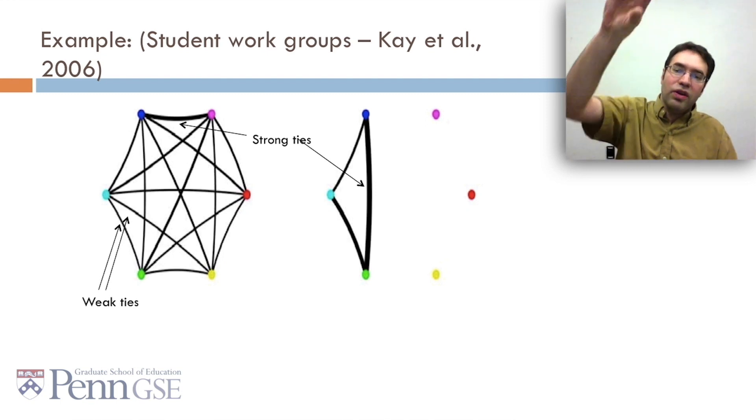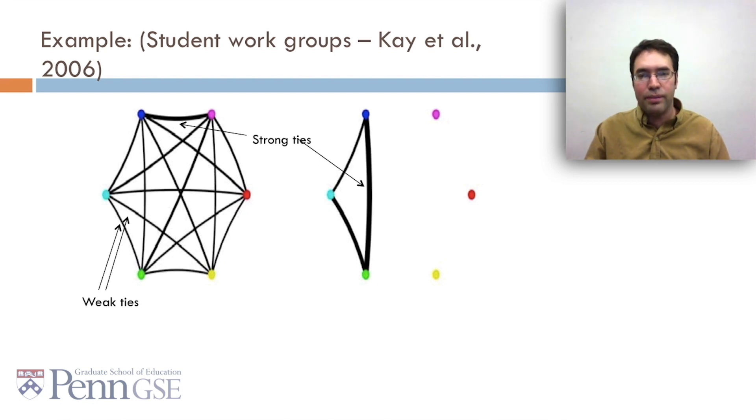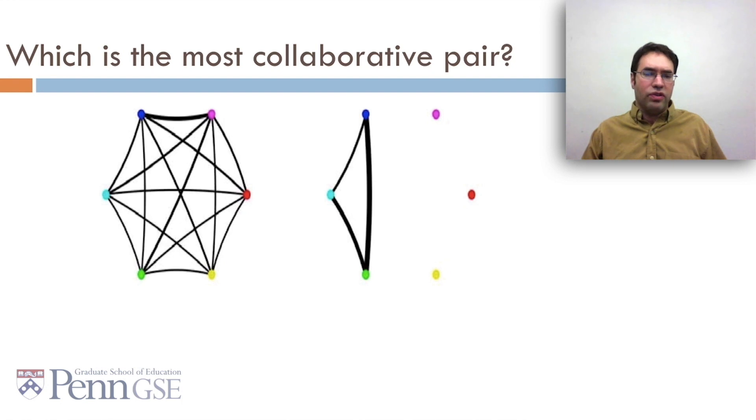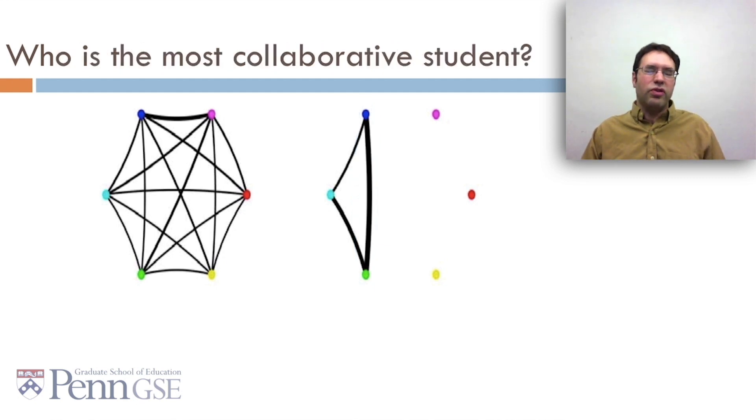And, of course, the pink to red student on the other graph have no tie at all. So which student group works together better? Well, I said one does, and you can kind of tell which one is working together. Which is the most collaborative pair of students? Well, it's a little hard to tell, but probably it's actually this blue to green one on the sparser graph. Who's the most collaborative student? That's also a little hard to tell. But probably, in this case, it's the pink one. The pink one talks to everybody in his or her group, and has relatively strong ties with everybody except for yellow.